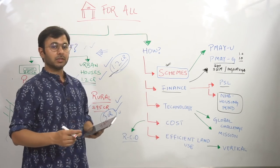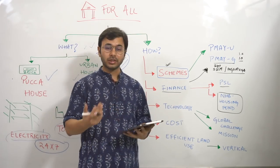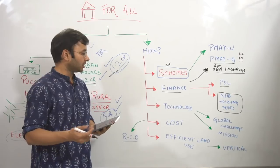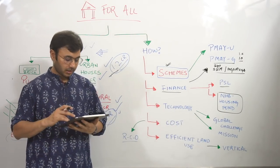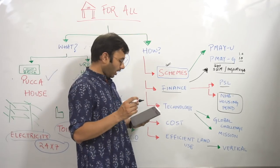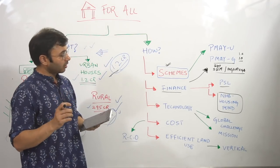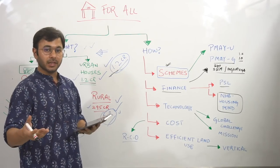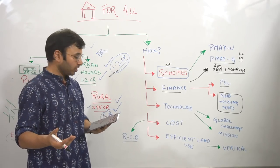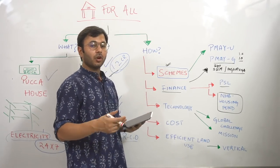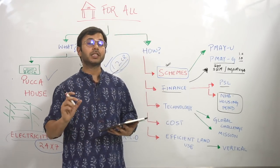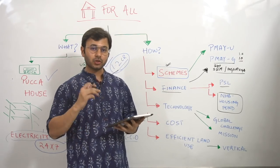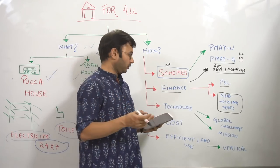And the next is technology. So how exactly will technology ensure that we have housing for all? Global challenge and mission. So what Niti Aayog is saying is that global housing technology challenge has been already launched and needs to be launched or carried out on a regular basis so that new technologies can come in, in order to create better houses in a shorter period of time and which are cheaper also.